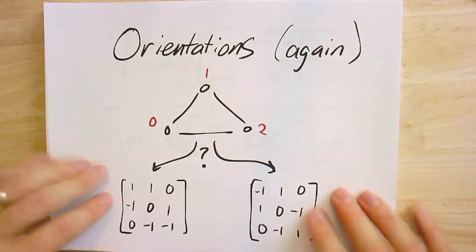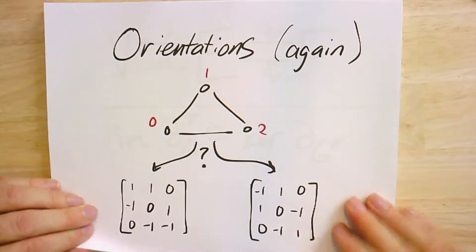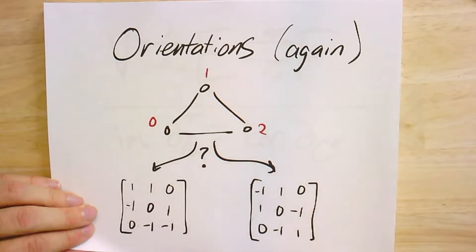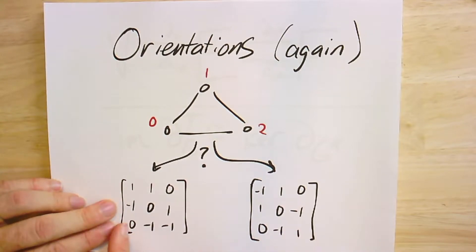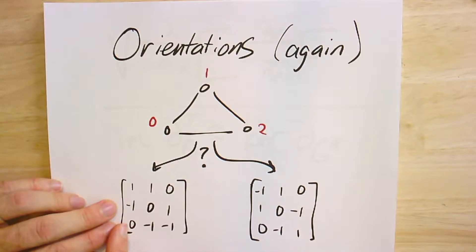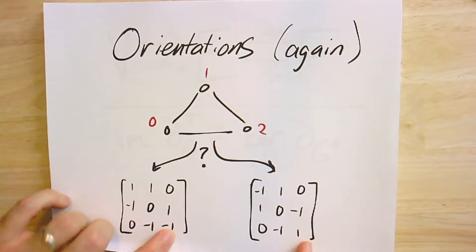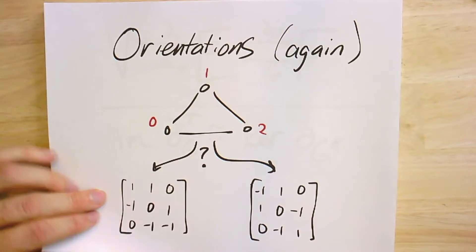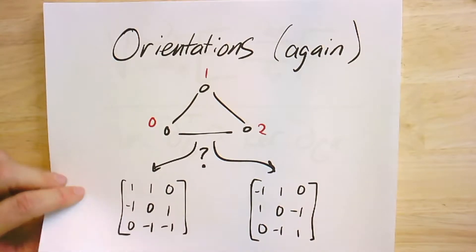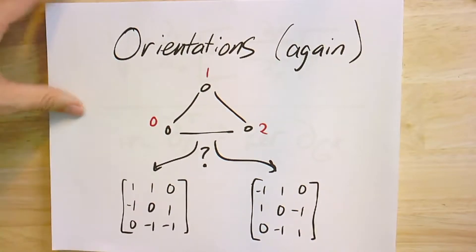So I'm going to work through that here. Here's our starting picture. Here's a graph and I had two different boundary matrices. In this case I've oriented the edges one way, and in this one I flipped the first edge and the last edge, keeping this one the same. So it's two different orientations on the same graph, and we can ask which one is better.